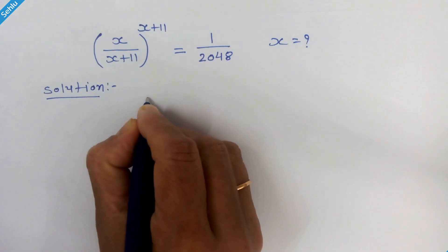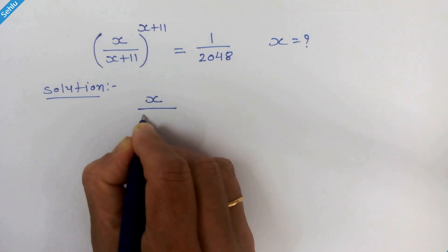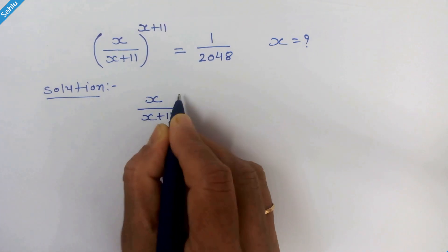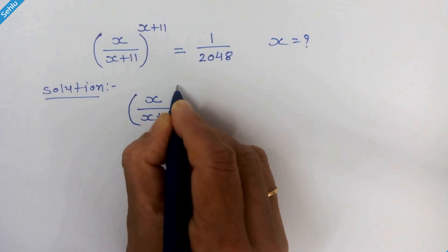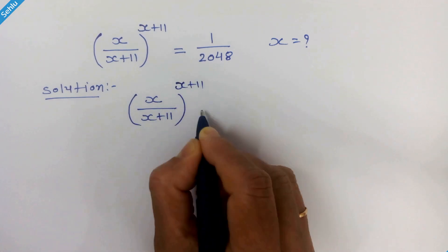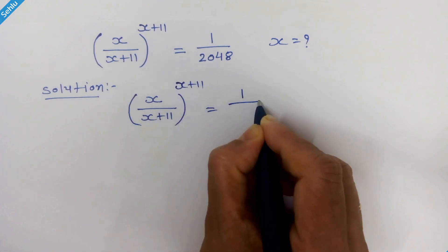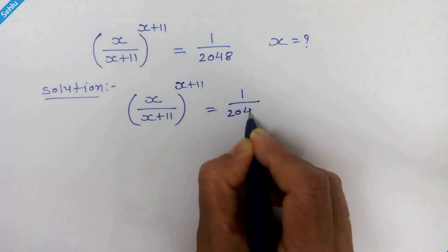So here we have x upon x plus 11 whole raise to x plus 11 is equal to 1 upon 2048.